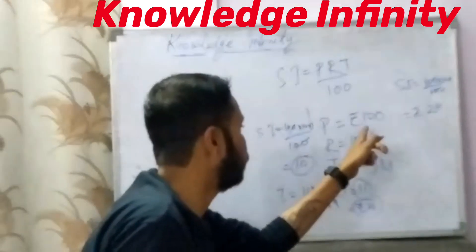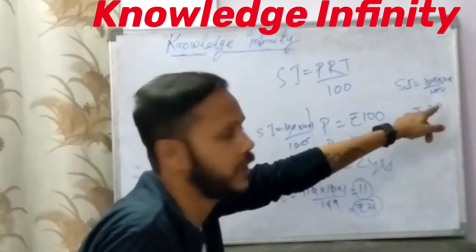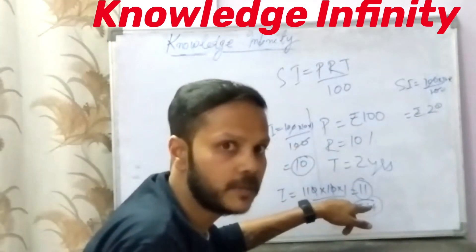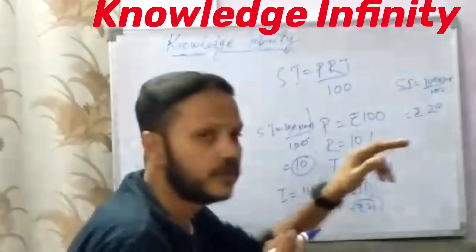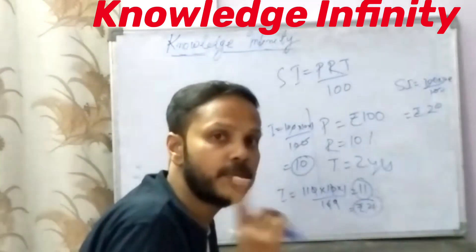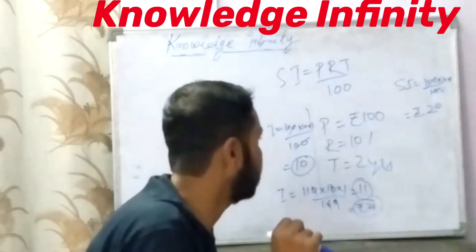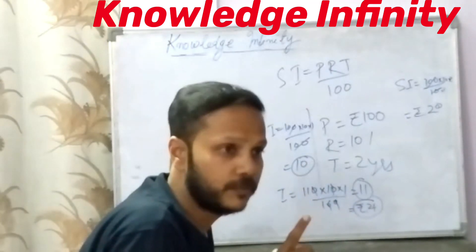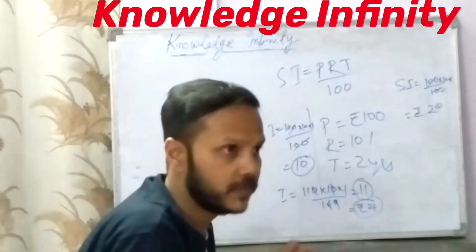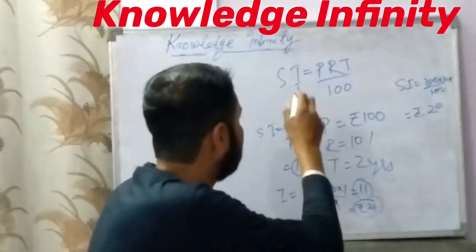Now you can see: for the same principal of 100 rupees at 10 percent for 2 years, simple interest came to be 20 rupees and compound interest came to be 21 rupees. So for any time interval more than one year, compound interest will always be greater than simple interest. For a time of one year, simple interest and compound interest are the same.